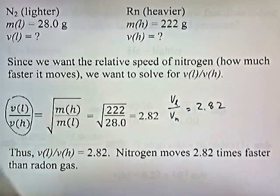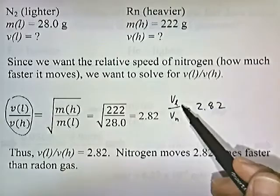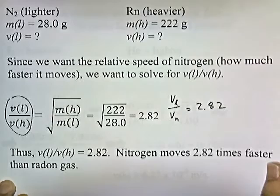So, what that means is that nitrogen moves 2.82 times faster than radon gas. So, any time they're asking how much faster one gas moves compared to another, you're just solving for this ratio. Let's try another problem.